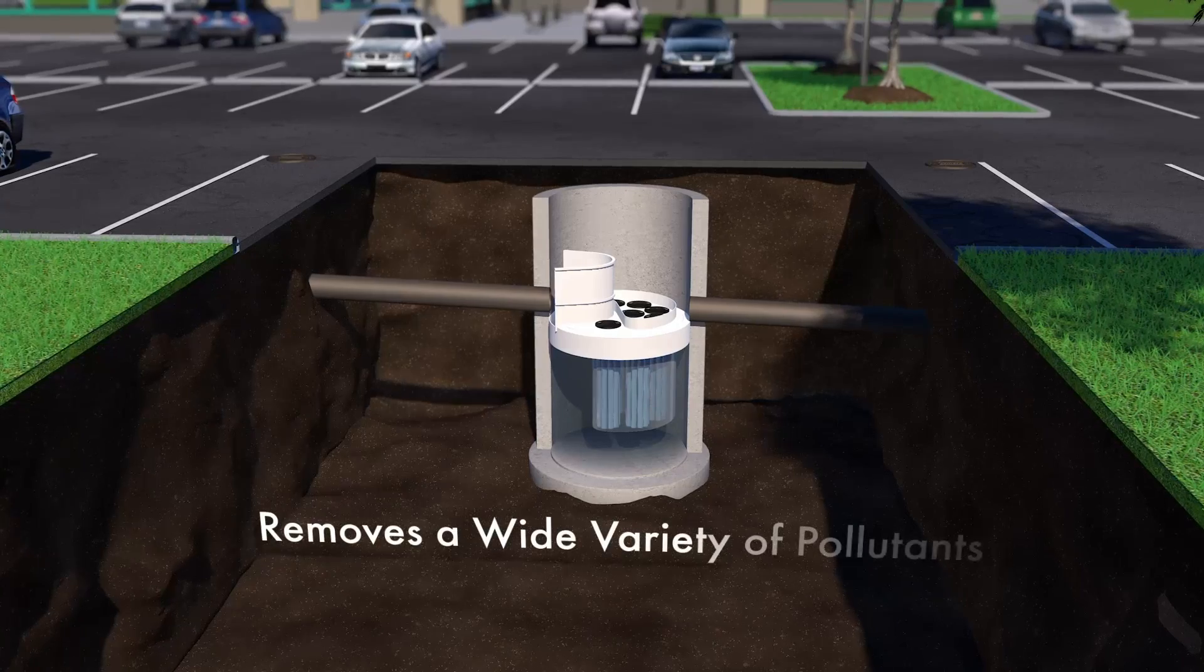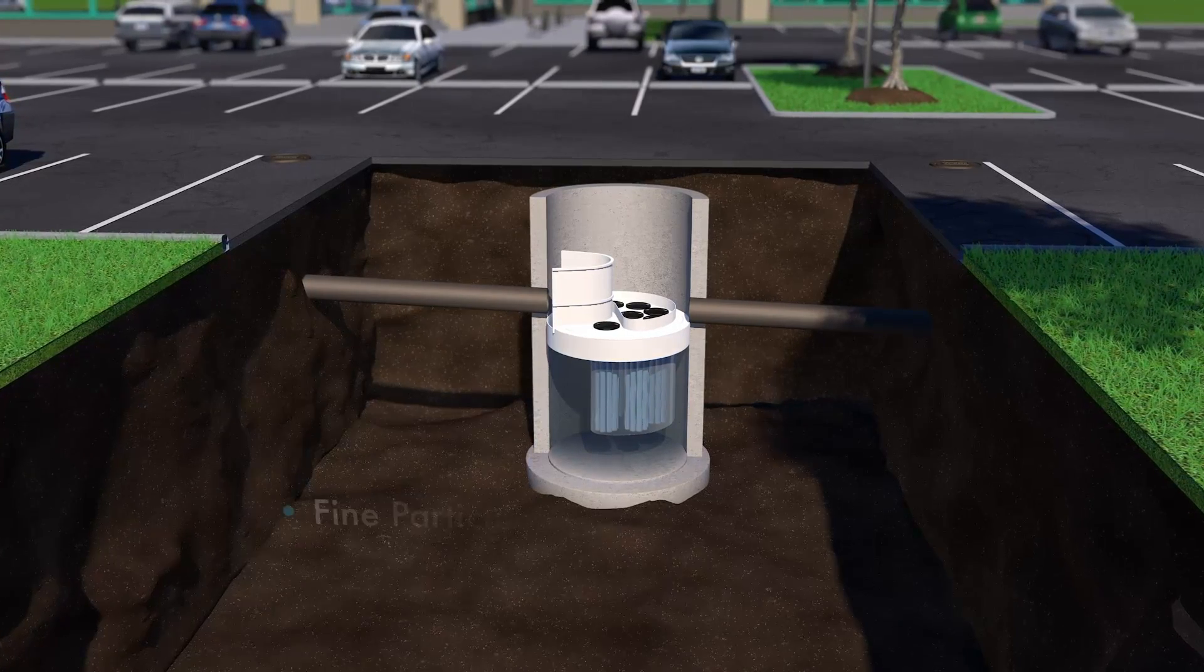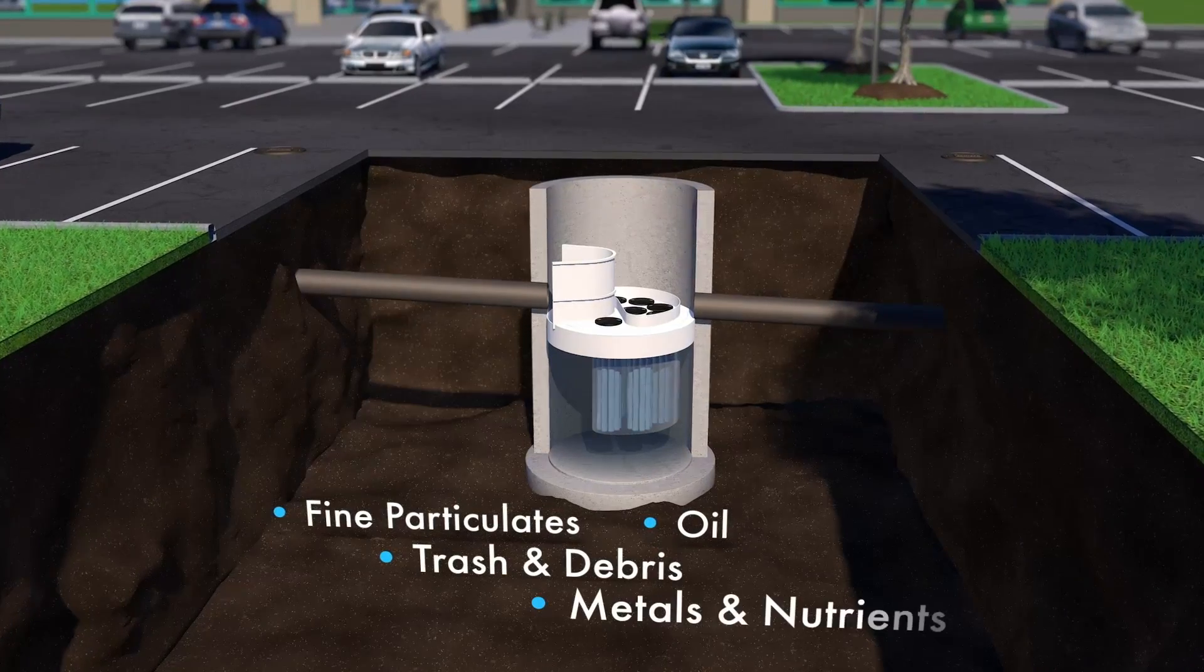The Jellyfish Filter removes a high level and wide variety of stormwater pollutants, such as fine particulates, oil, trash and debris, metals and nutrients.